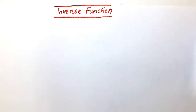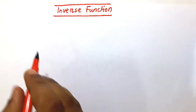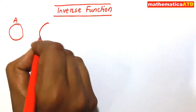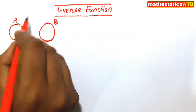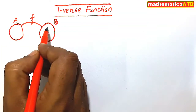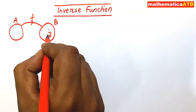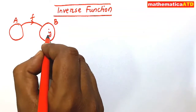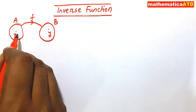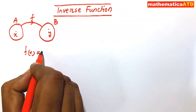Friends, the topic is inverse function. Let us consider a one-one function with domain A and range B with respect to the function f — that is, this correspondence from A to B. Let y be an element of B. So this member y belongs to B arises from one and only one member x belonging to A, such that f(x) is equal to y.